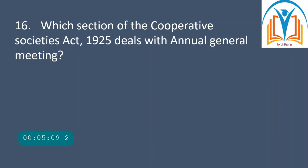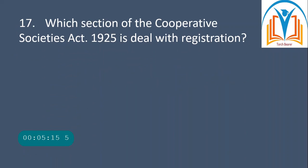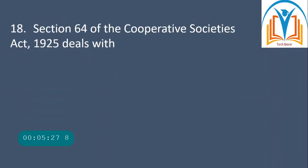Which section of the Cooperative Societies Act 1925 deals with annual general meeting? Section 12 deals with annual general meeting. Which section deals with registration? Section 10 deals with registration.